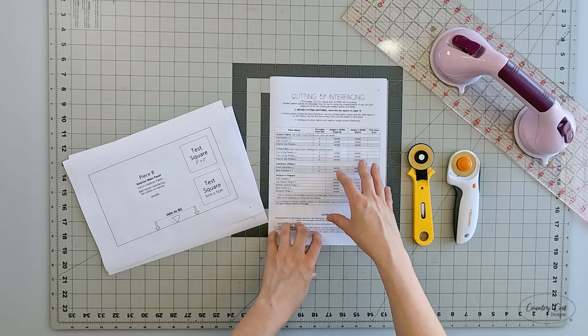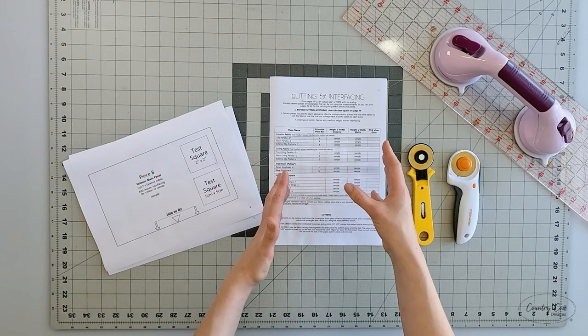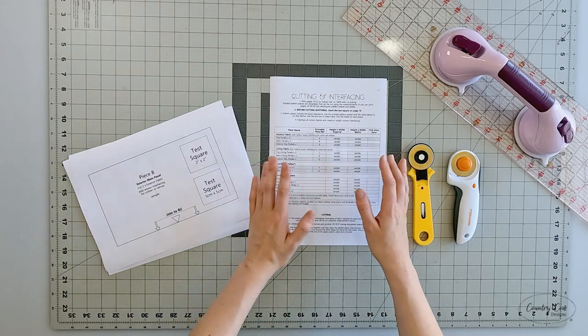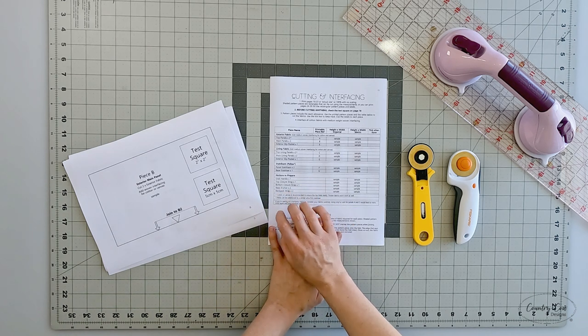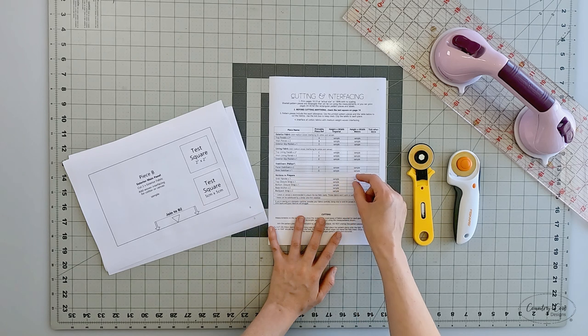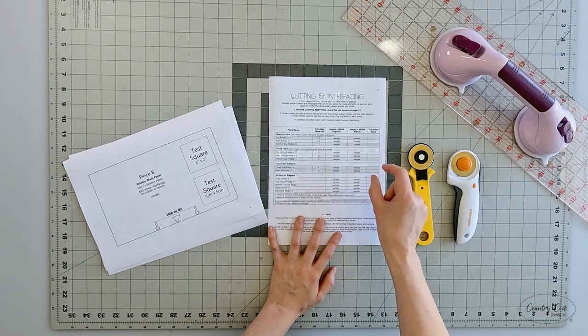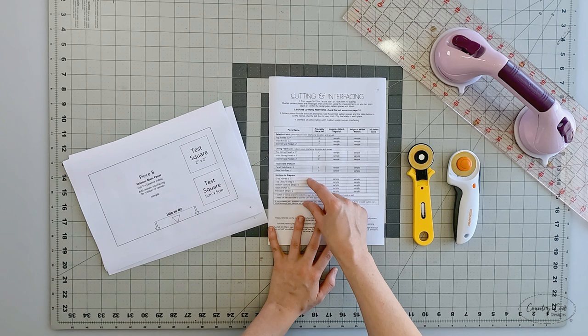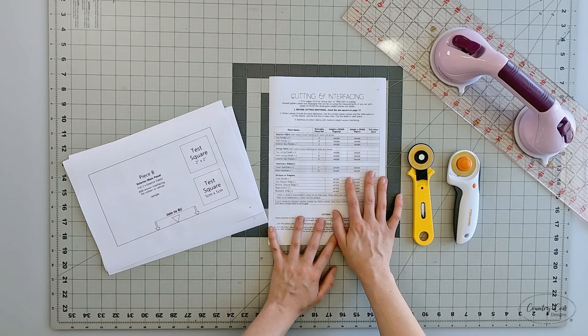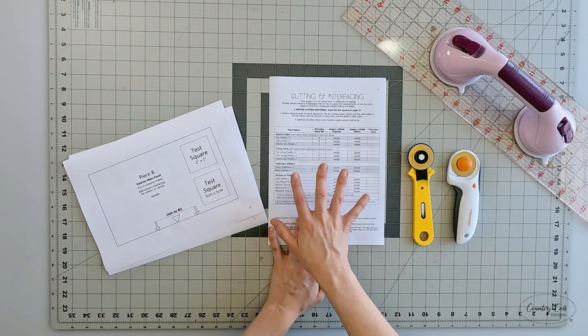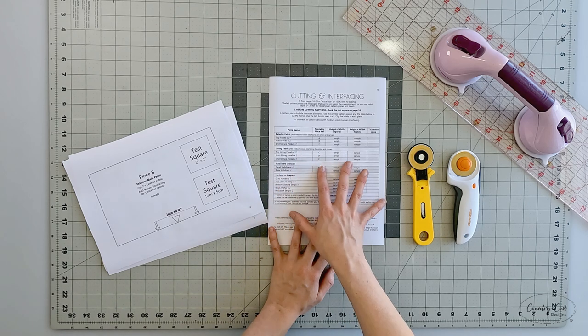If you're printing using the different size paper, sometimes it can stretch to fit. Make sure that you're using the correct file. You'll see in the file name one will be called letter paper for use in the USA and Canada. The other file will be called A4 paper for use outside the USA and Canada. Just make sure you've got the correct file before you start printing.